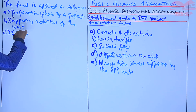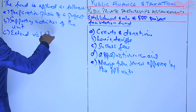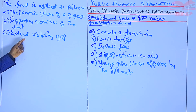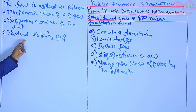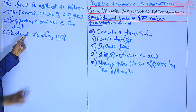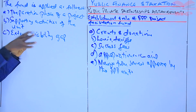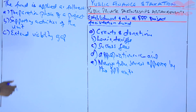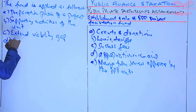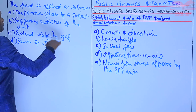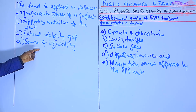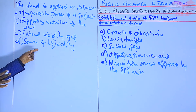Third, the fund is used to extend viability gap finance to projects that are desirable but cannot be implemented in the absence of financial support from the government. The fund is also a source of liquidity to meet any contingent liabilities arising from a project.